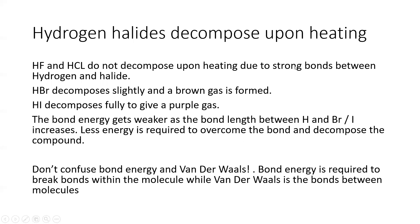Hydrogen halides decompose upon heating for some of them. Hydrogen fluoride and hydrogen chloride do not decompose upon heating due to strong bonds. Hydrogen bromide decomposes slightly, producing a brown gas. Hydrogen iodide decomposes fully to give a purple gas — iodine vapor. The bond energy gets weaker as the bond length between hydrogen and the halogen increases — from fluorine to iodine, the anion size increases, increasing the H–halogen bond length, weakening the bond. Don't confuse bond energy (within the molecule) with van der Waals forces (between molecules).